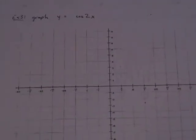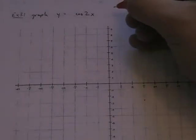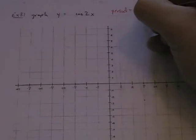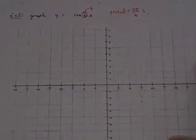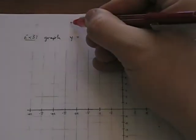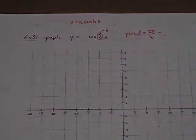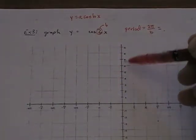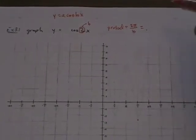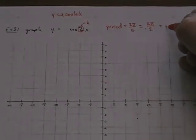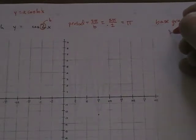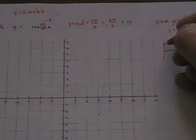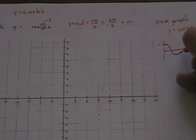Let's try y equals 2 cosine of 2x. The period for a cosine graph is two pi over b, where b is the coefficient of x. Any trig book will write this as y equals a cosine bx — a is the amplitude, the vertical stretch, and b is the period modifier, the horizontal stretch. This time I get two pi over two, which is just pi. Now, what is our base graph? The base graph is y equals cosine of x.